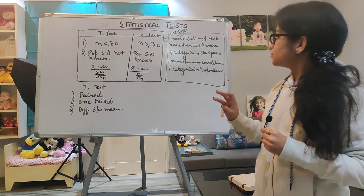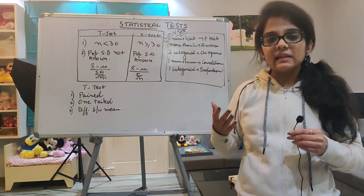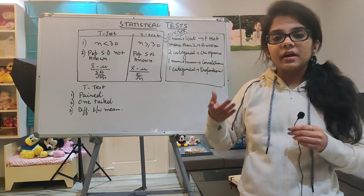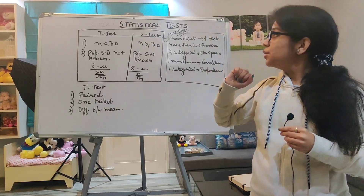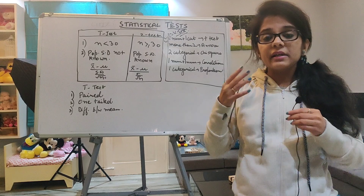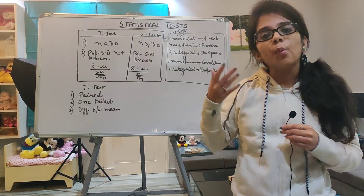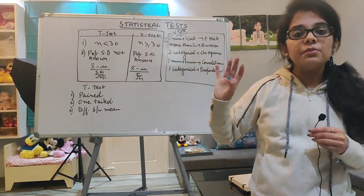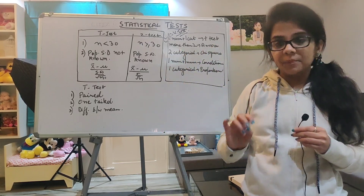Now if I talk about ANOVA — ANOVA means Analysis of Variance. ANOVA is used when there are more than two groups to be compared. In t-test we talked about just two groups, but ANOVA testing is used when there are more than two groups. I hope you are clear with t-test, z-test and ANOVA.